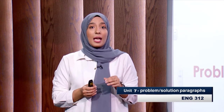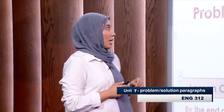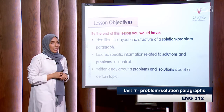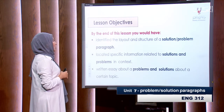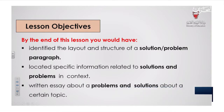Dear grade 12 students, welcome back to English 312. Before I proceed further, I would like to remind you to please get your textbook, notebook or paper, your pen or pencil, and your dictionary, because you might need to refer to it today. Our lesson will be about problem and solution — Unit 7. The objectives we will be tackling are: by the end of the lesson, you would have identified the layout and structure of a problem-solution paragraph, located specific information related to solutions and problems in context, and written an essay about problems and solutions about a certain topic.